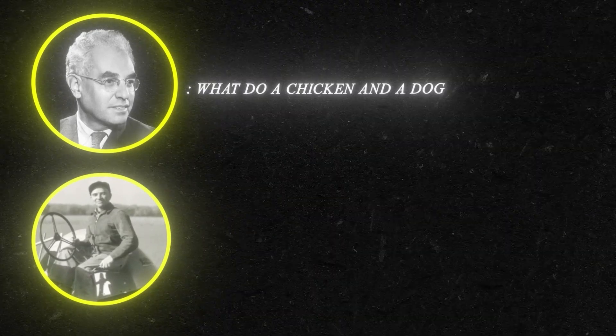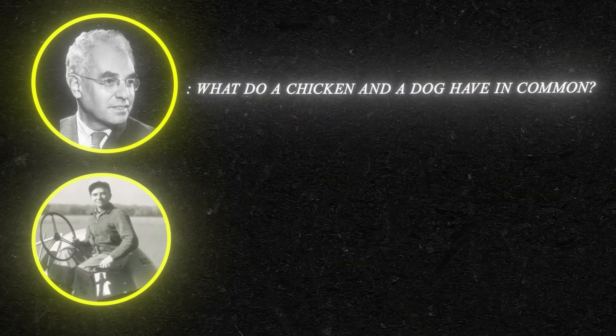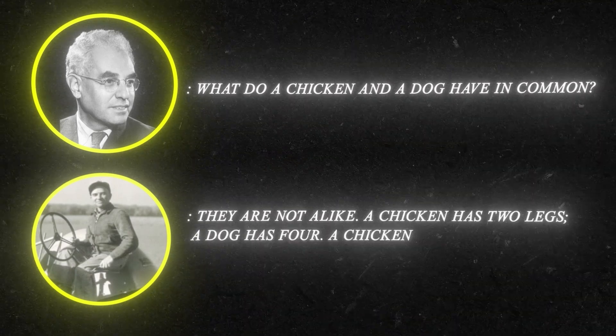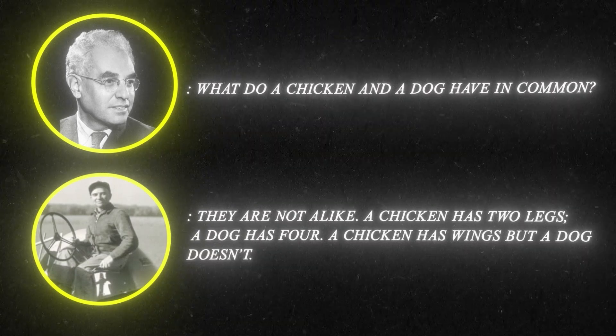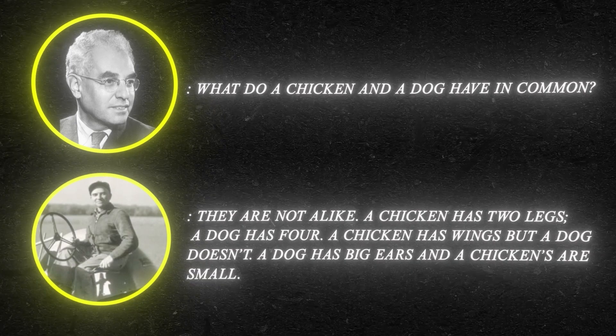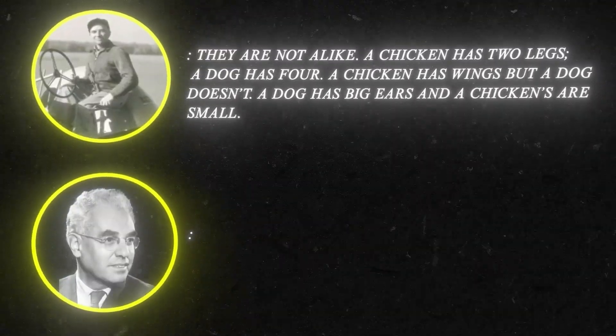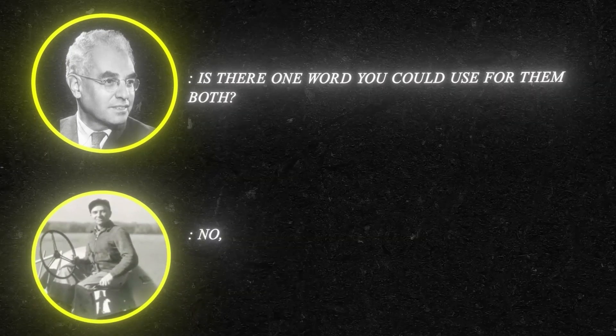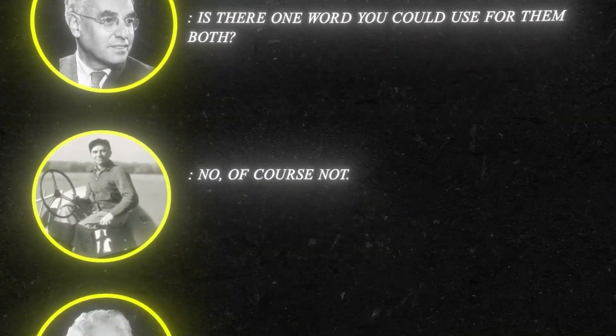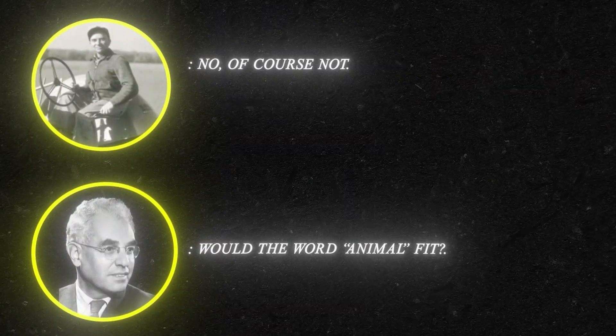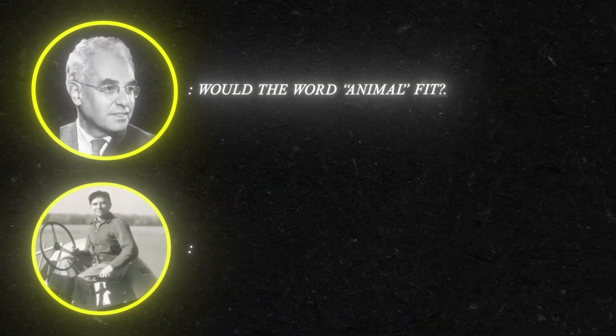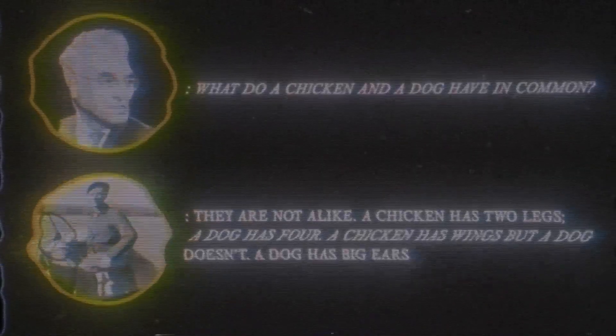One of his sessions went like this. What do a chicken and a dog have in common? The farmer said, they're not alike. A chicken has two legs, a dog has four. A chicken has wings, but a dog doesn't. A dog has big ears, and a chicken's are small. The doctor responded, is there one word you could use for them both? And the farmer would say, no, of course not. The doctor said, would the word animal fit? But the farmer then realized it does, and said yes. Many of the discussions went like this.